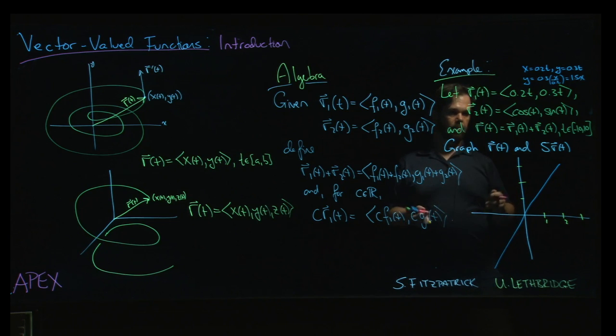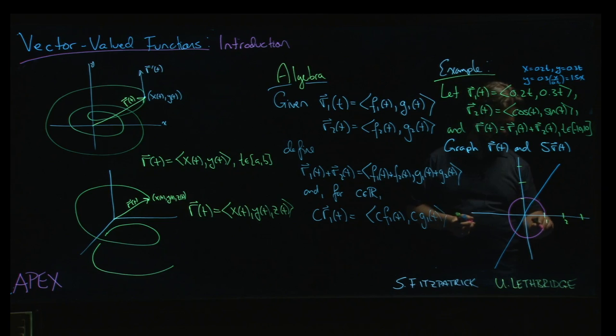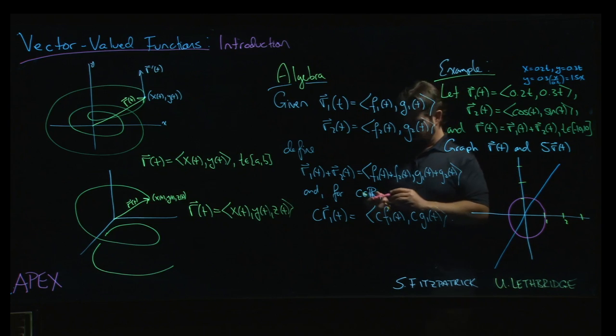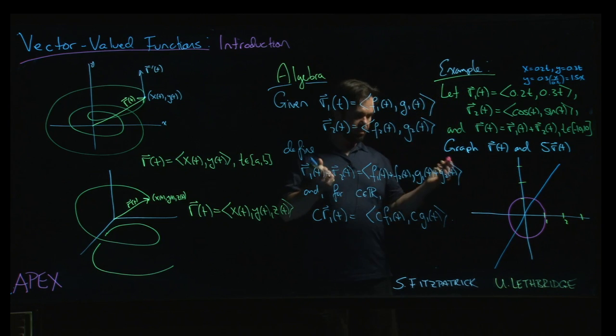And this is just the unit circle. Now, t goes from -10 to 10, but all that means is we're going to go more than once around the circle. So those are the two vector valued functions that we're combining.